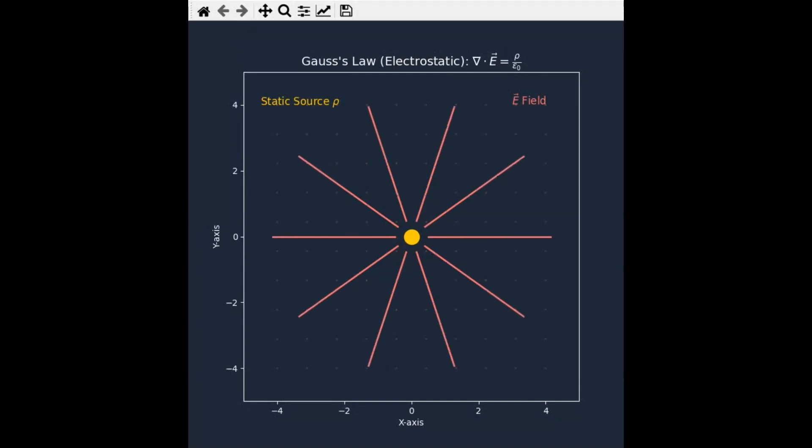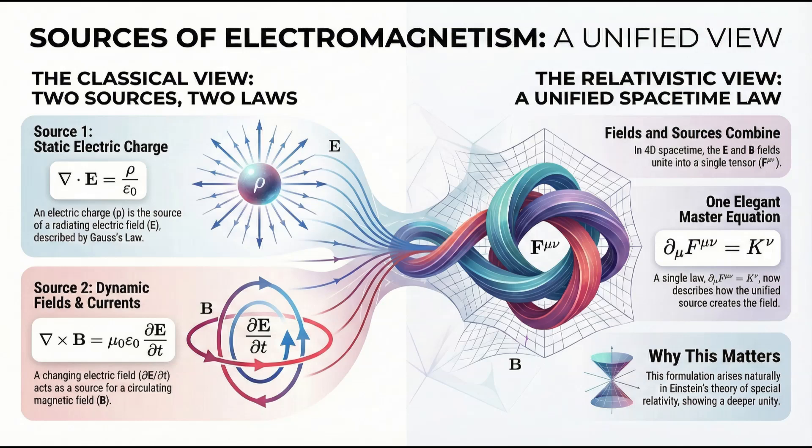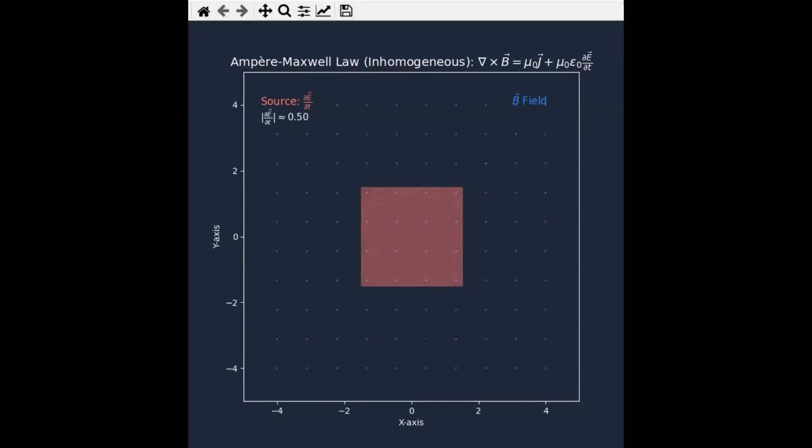Second, once you add time into the mix, you realize the electric and magnetic fields aren't actually separate things. They get unified into this single mathematical object, a tensor. It basically means electricity and magnetism are just two sides of the same coin, and what you see just depends on how fast you're moving.